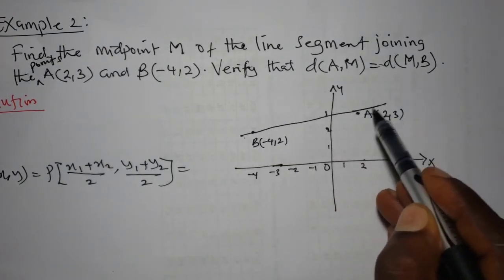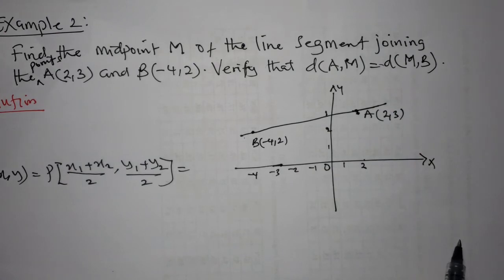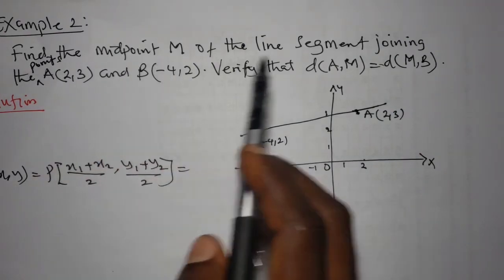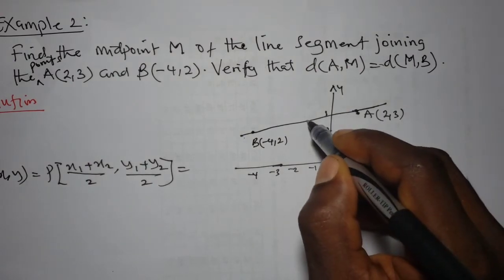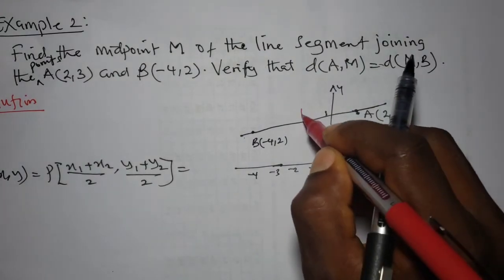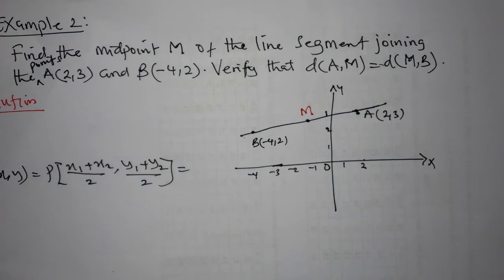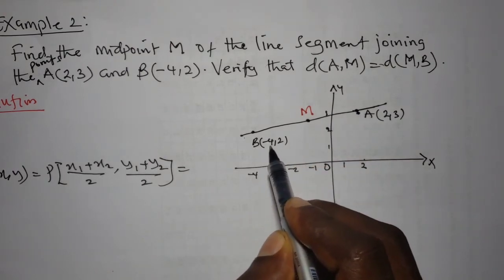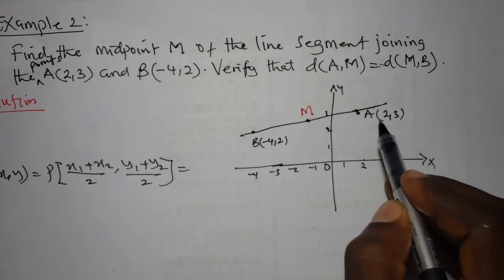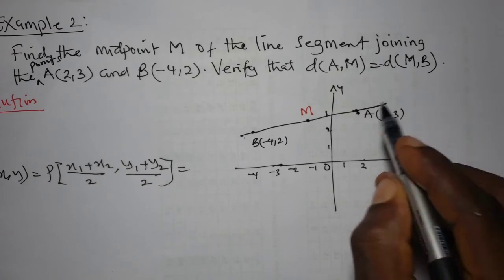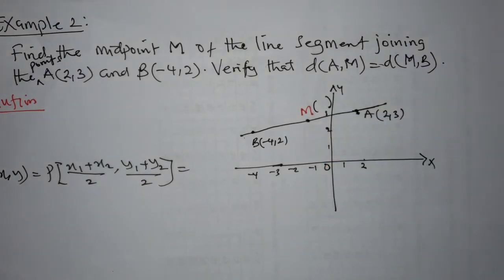Joining these two points gives a straight line. The question asks us to find the midpoint M of this line segment. A has coordinates (2, 3), B has coordinates (-4, 2), and we need to find the coordinates of midpoint M.